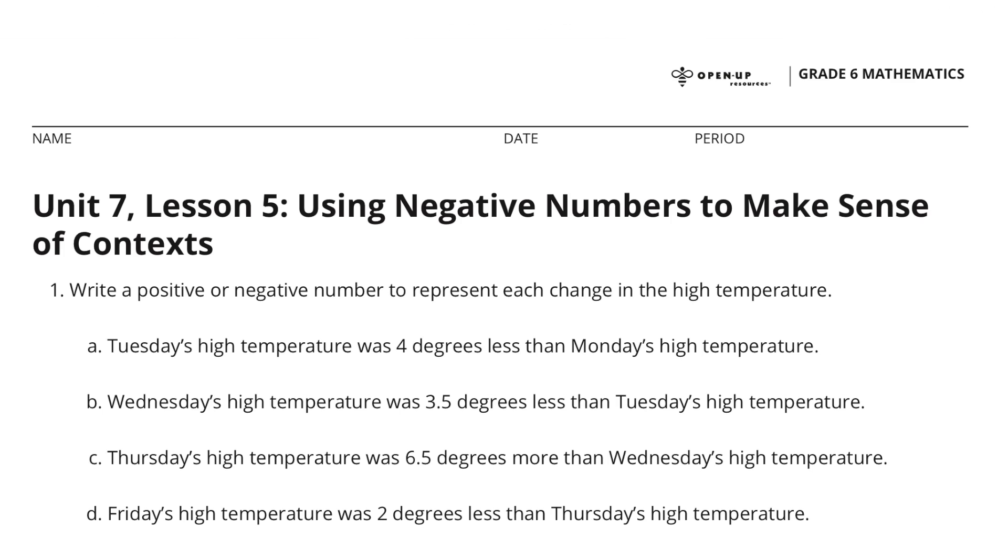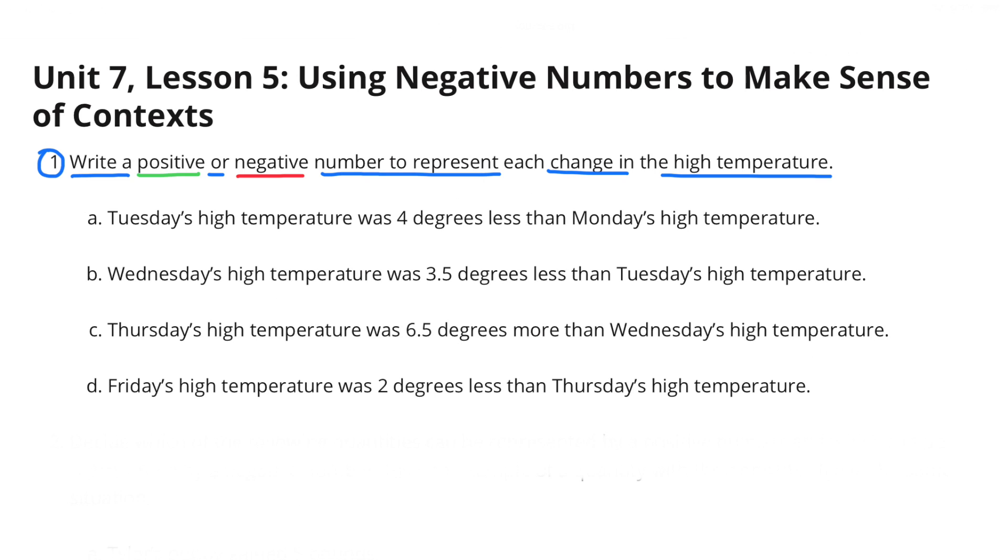Unit 7 Lesson 5: Using Negative Numbers to Make Sense of Contexts. Write a positive or negative number to represent each change in the high temperature.